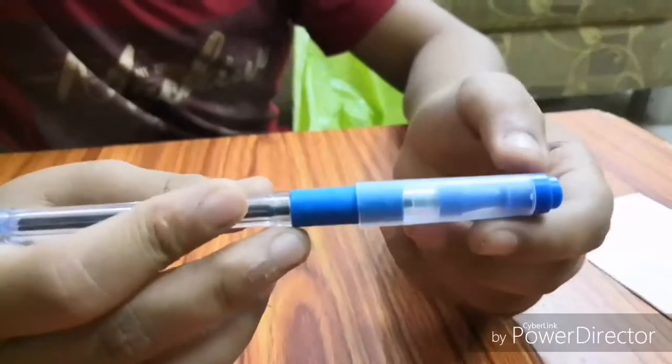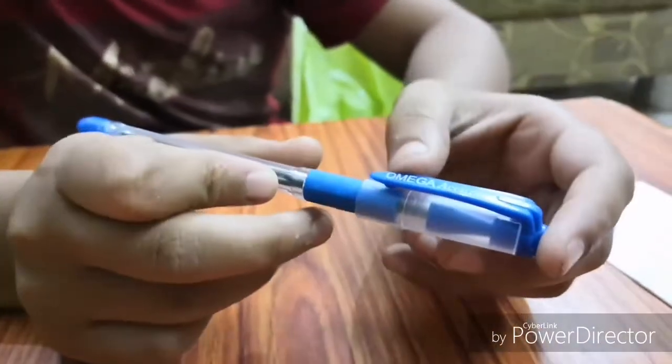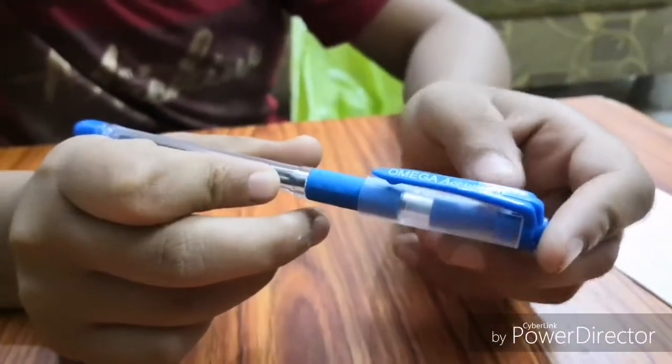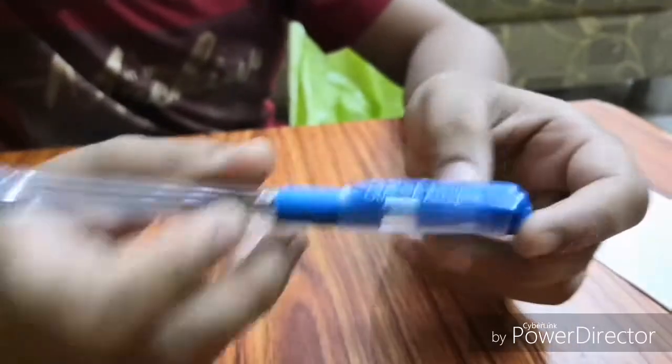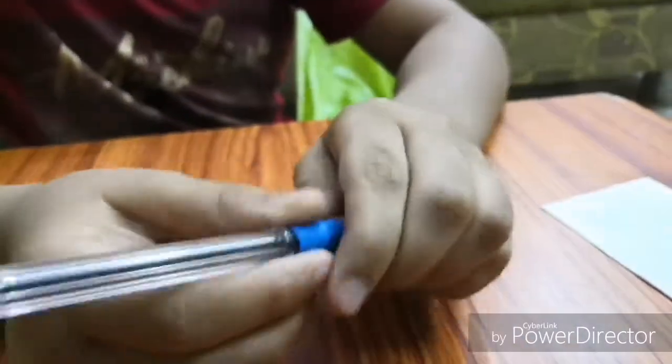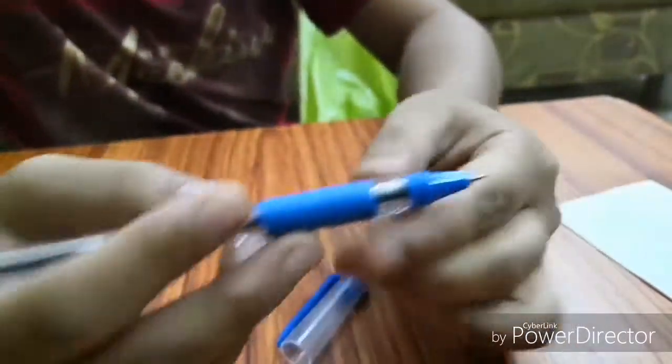The cap is translucent and Omega branding has been written here on the cap. So that's all from the body. But one thing which I have liked in this pen is that in five rupees only, a new brand has given us a rubber grip.